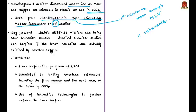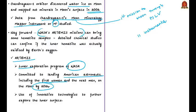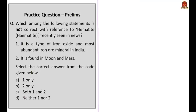The hope is that NASA's Artemis mission can bring some hematite samples so that detailed chemical studies can confirm whether lunar hematite was actually oxidized by Earth's oxygen. Artemis is a lunar exploration program of NASA under which NASA is committed to landing American astronauts — including the first woman and the next man — on the moon by 2024. The mission will also use innovative technologies to further explore the lunar surface.